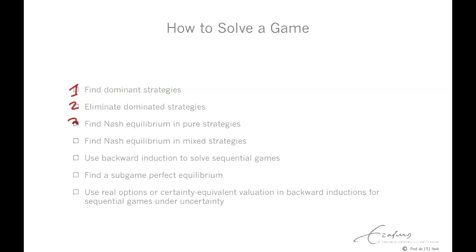Third, find a Nash equilibrium in pure strategies. In cases where we cannot clearly find a dominant strategy or eliminate all dominated strategies, we can find a Nash equilibrium in pure strategies by cell-by-cell inspection and reasoning.